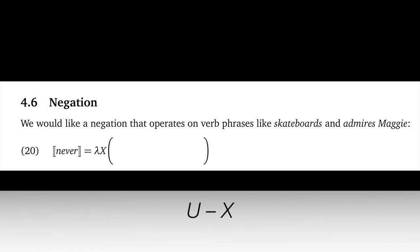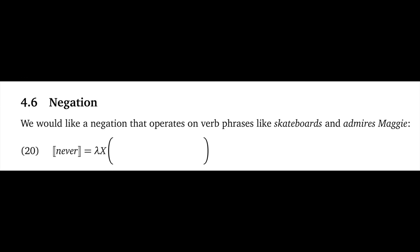To do that, we just get the complement of the input set X, the set of things in our universe that are not in the set X. And that's all we need for never skateboards and never admires Maggie. And if the syntax allows it, we could semantically allow negation to stack. Two negations would cancel each other out, three would be like one, and so forth.